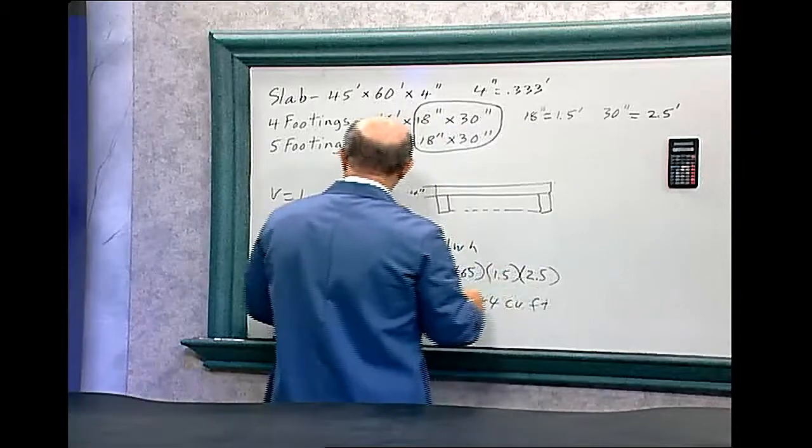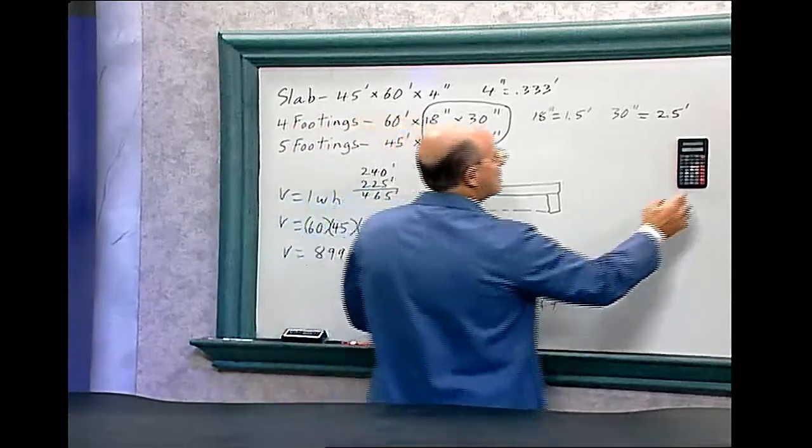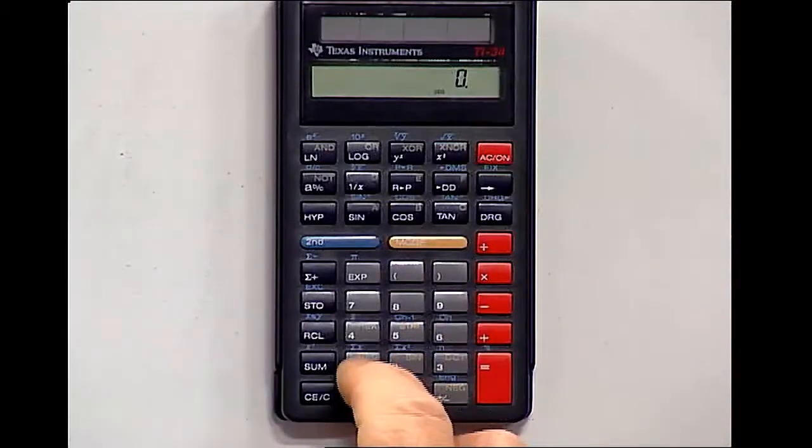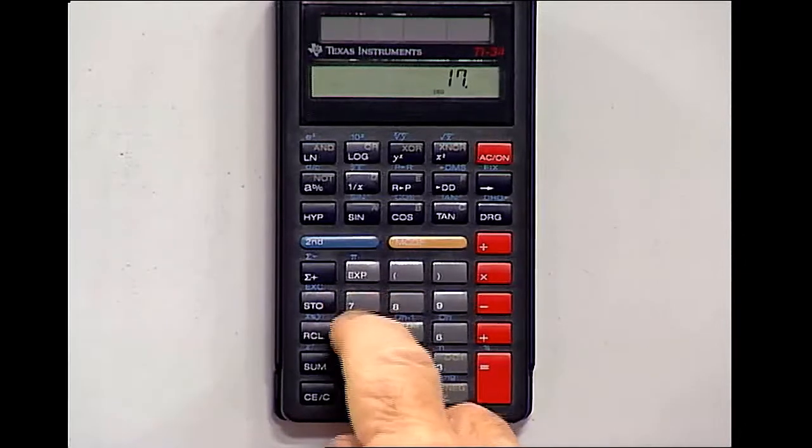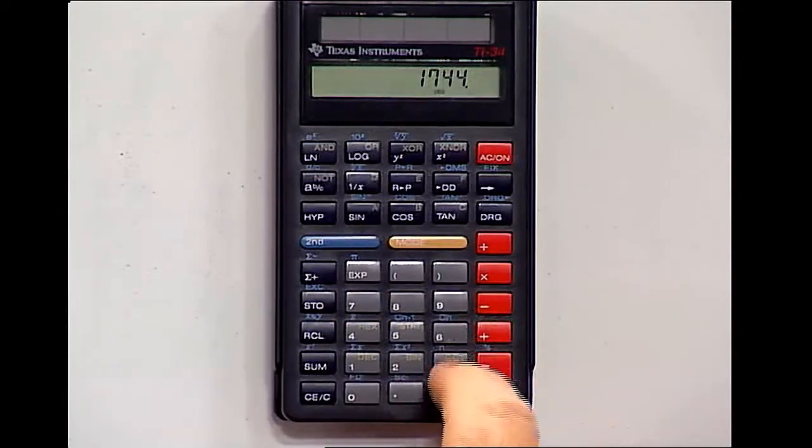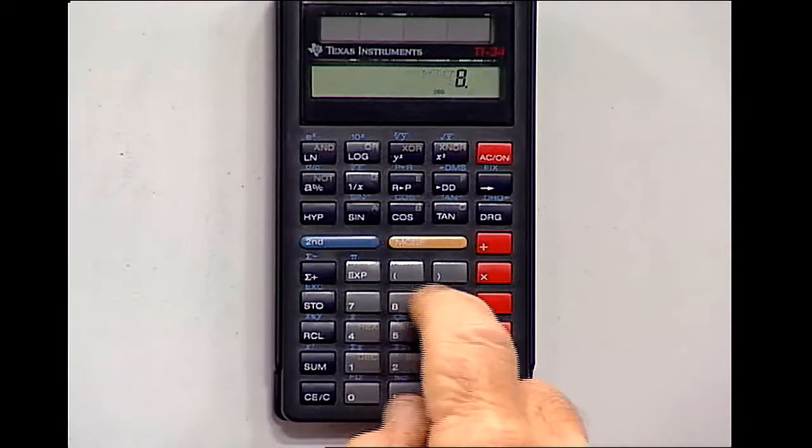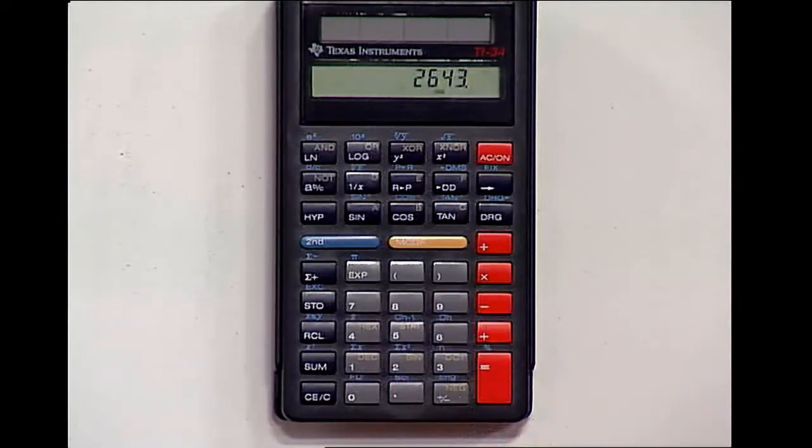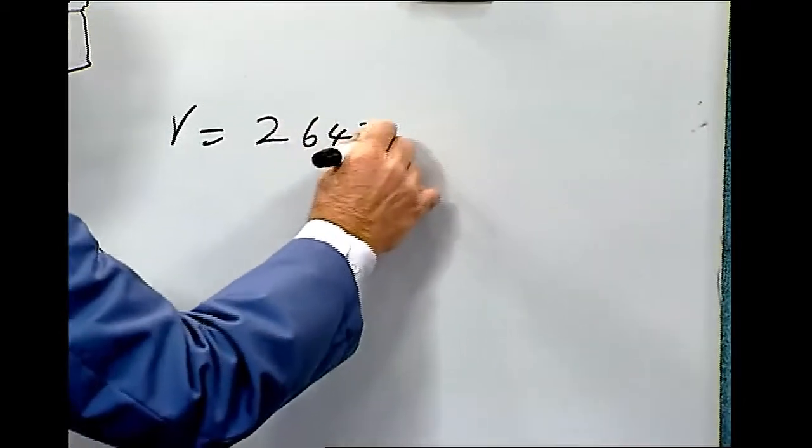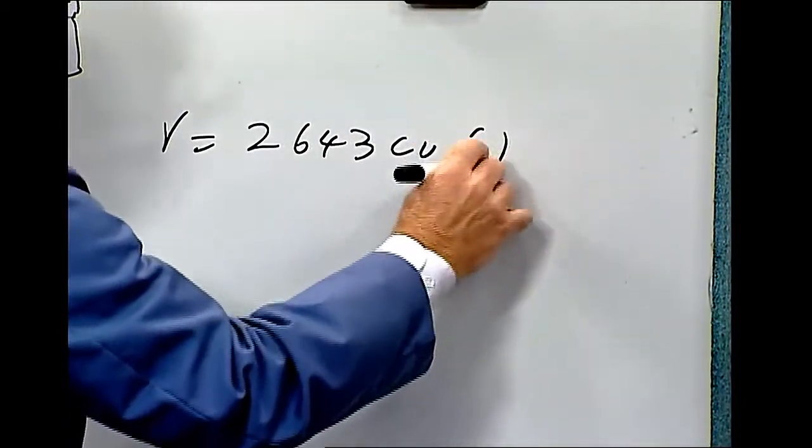And so let's add up these two numbers together. 1744 plus 899 equals, so the total volume equals 2643 cubic feet of concrete.